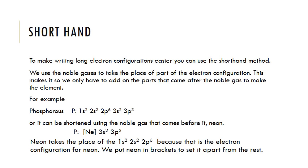There is a shorthand method using noble gases to simplify writing long electron configurations. Noble gases are on the right side of the periodic table and replace the beginning of the configuration. For example, phosphorus is 1s2 2s2 2p6 3s2 3p3, but using the noble gas shorthand we write [Ne] 3s2 3p3, because neon's electron configuration is 1s2 2s2 2p6. We put neon in brackets to set it apart so we can clearly see we're using a noble gas abbreviation.